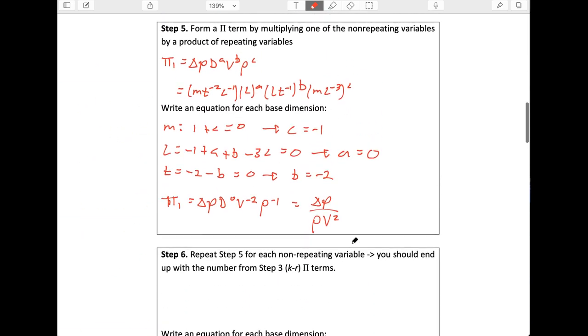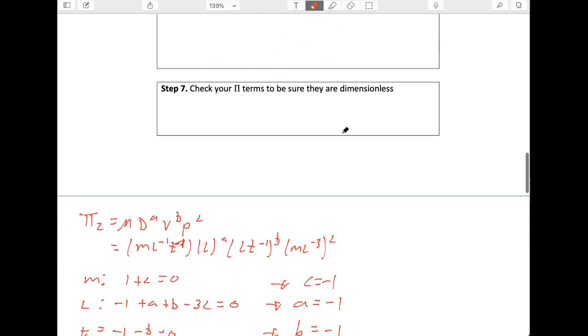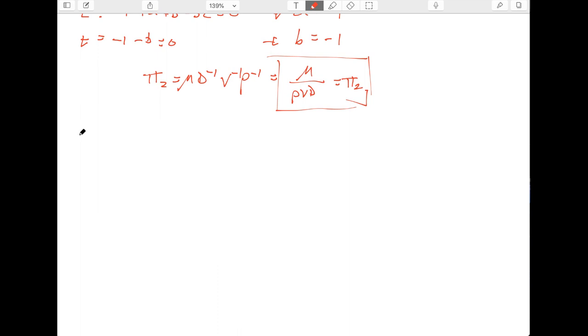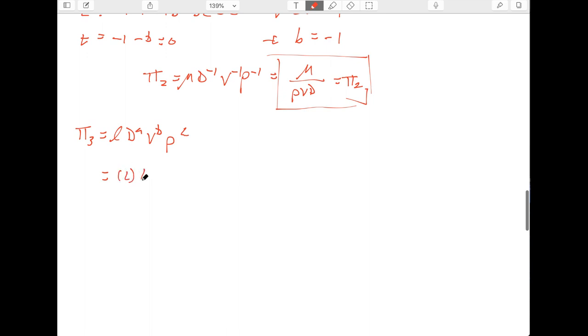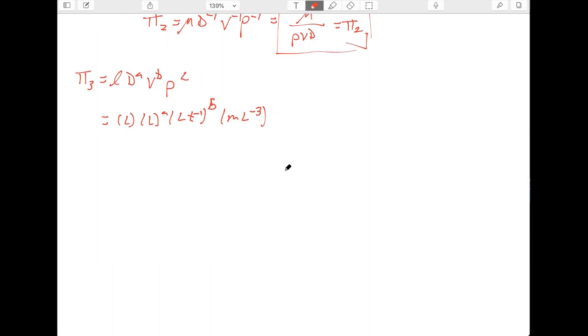So now we've handled two of our non-repeating variables, right? We did delta P and mu. Let's go ahead and do the length L. And so pi three is going to be L D to the A, V to the B, that got sloppy, sorry, V to the B, rho to the C. So that's L T to the minus one to the B, and ML minus three to the L, sorry, to the C.